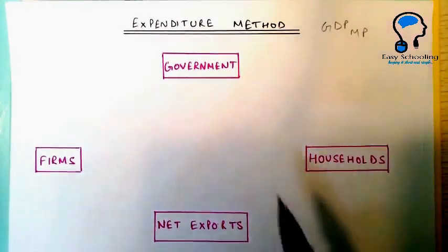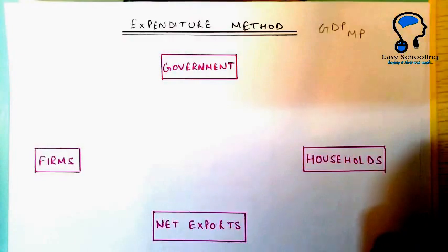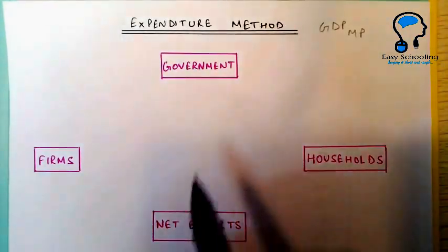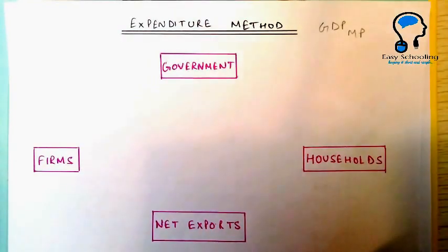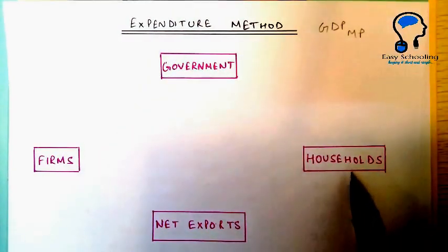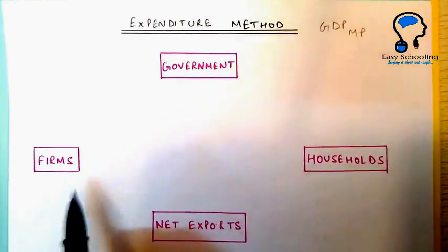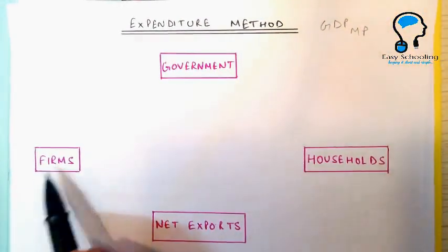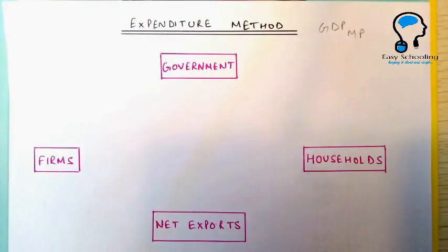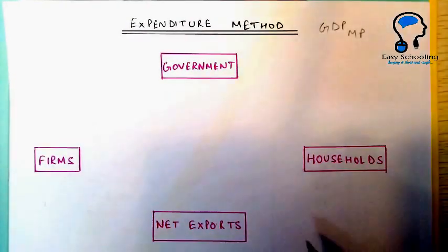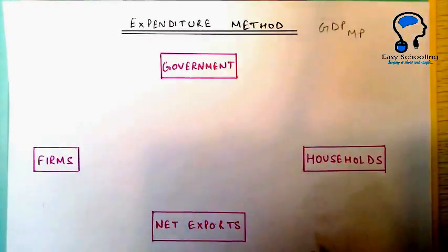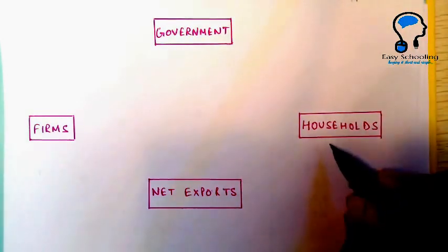In this video we will learn how to calculate national income by the expenditure method. In this method we have to calculate all the spending in an economy, including the spending of households — consumer consumption — then the investment made by firms, then the spending of government, and net exports. One by one we will see what we are going to include under all the sectors.